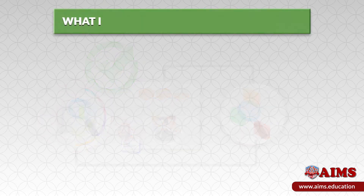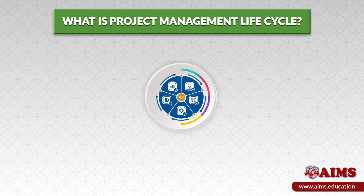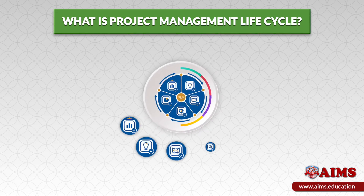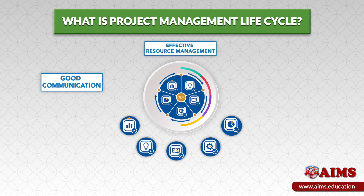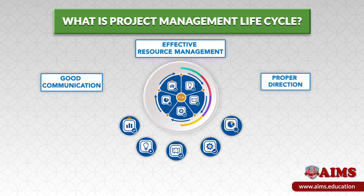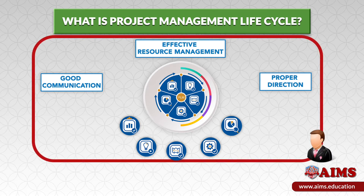What is a project management life cycle? The life cycle consists of five basic phases that ensures good communication, effective resource management, and proper direction to the completion of the project itself. A good project manager will oversee the project management stages to make sure that each are completed properly.